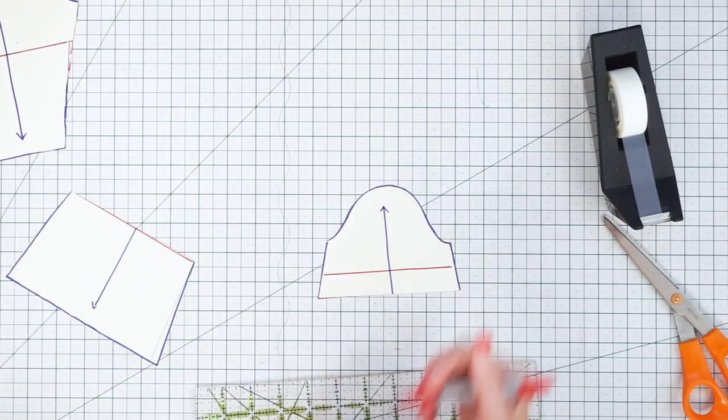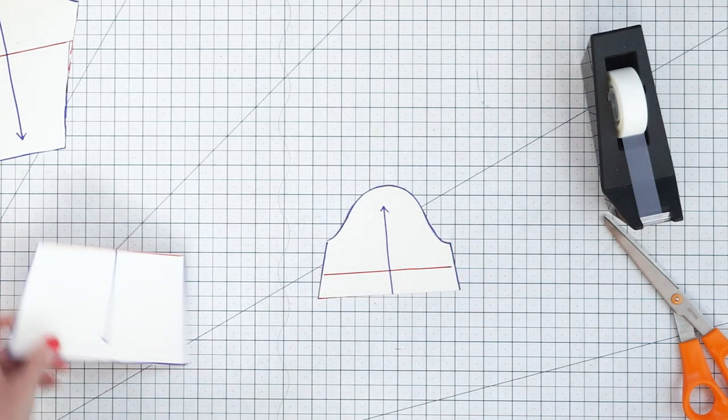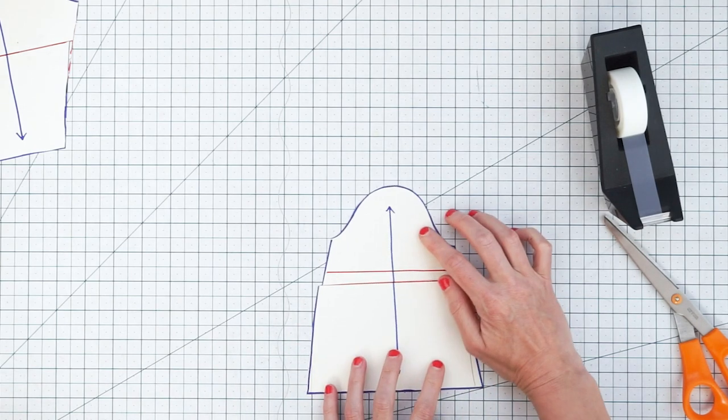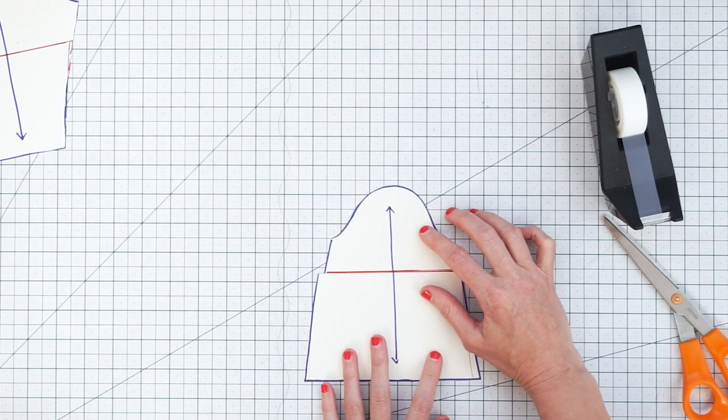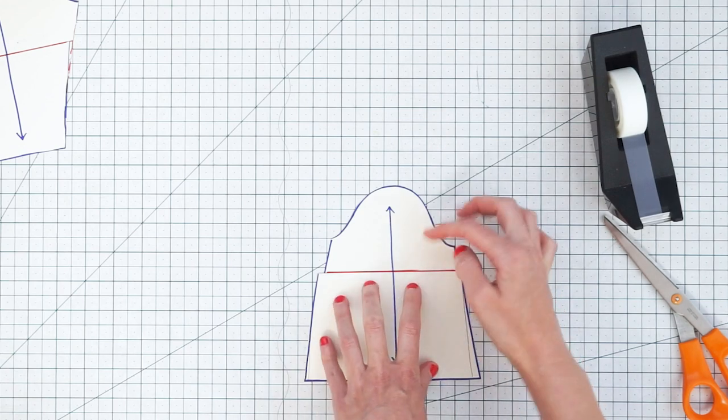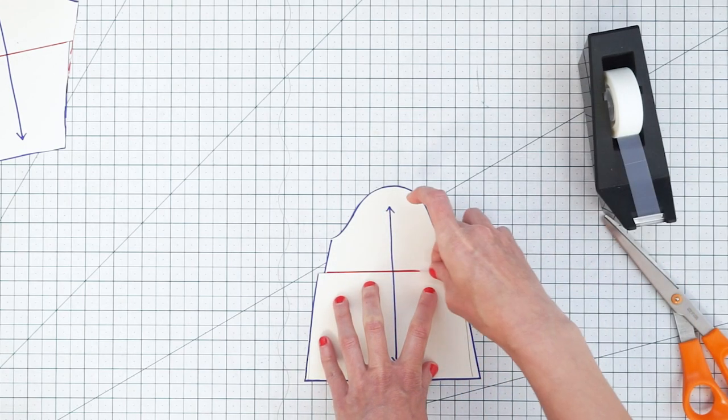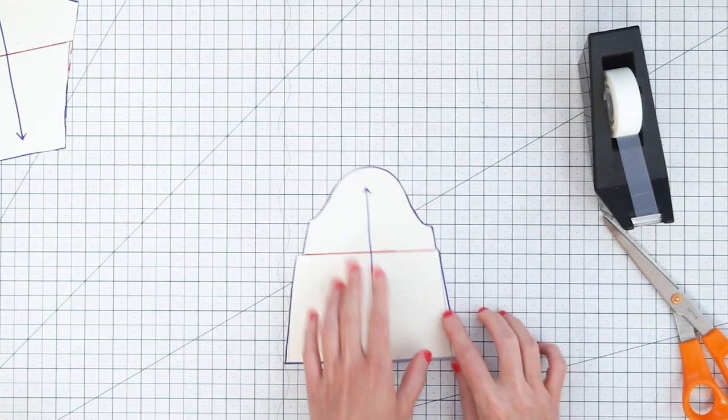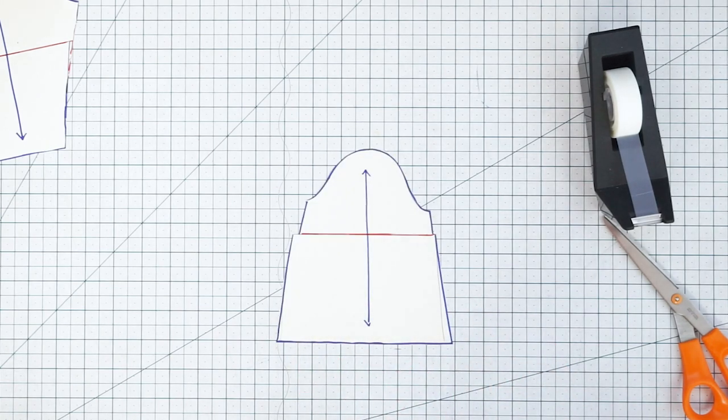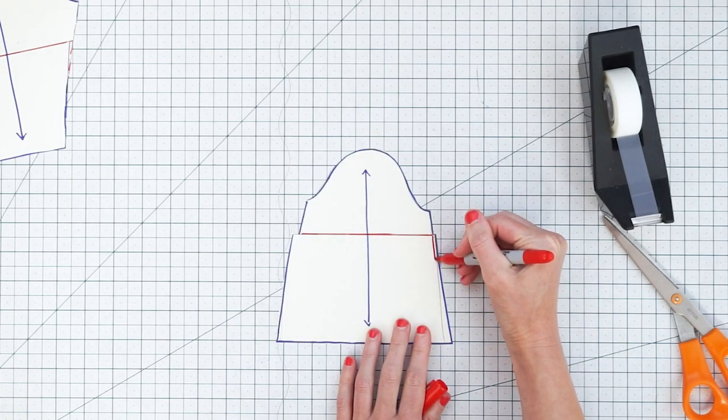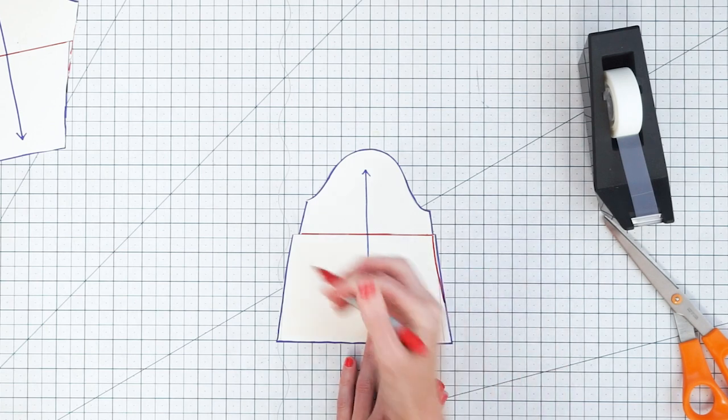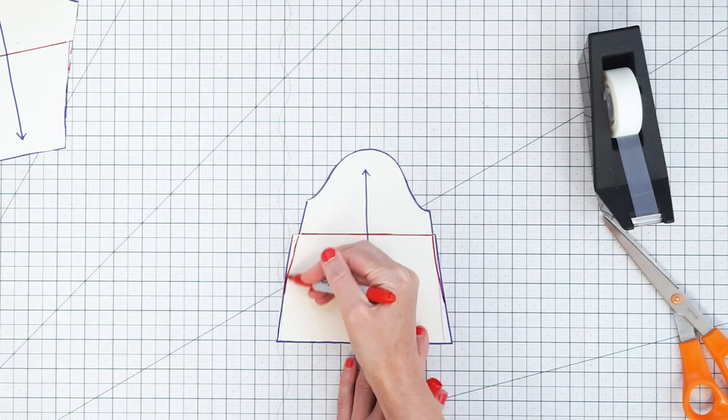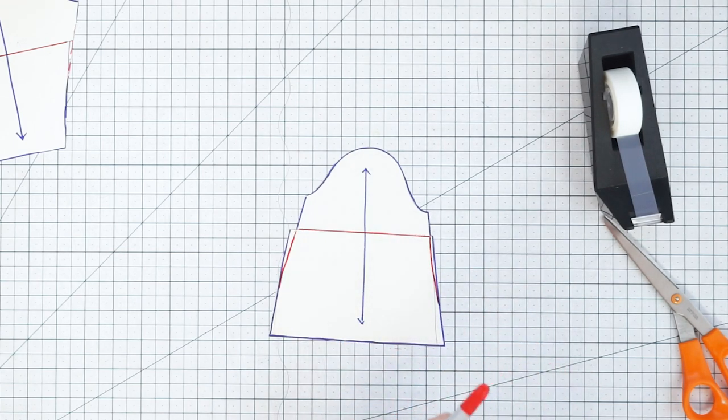So we're going to take out this amount of length and then you want to keep your grain lines matched up and move the pattern straight up until you hit your guideline. So here we can just go ahead and trim off this excess. So just kind of draw a new line down and cut that excess away.